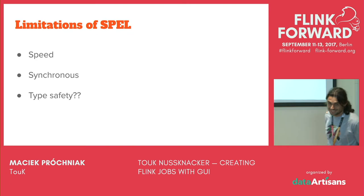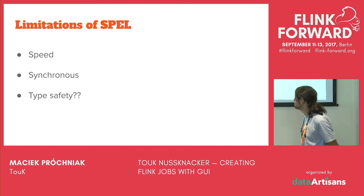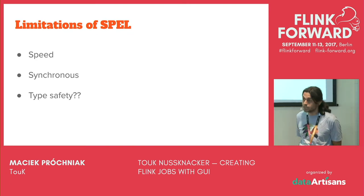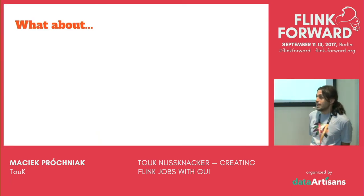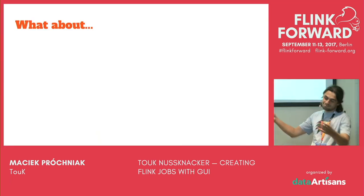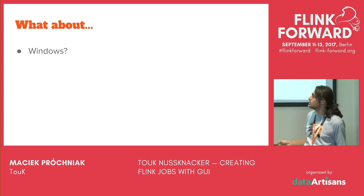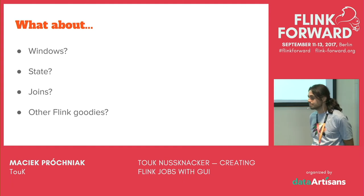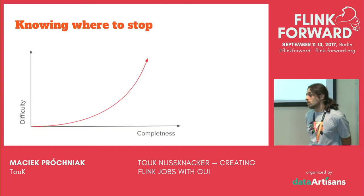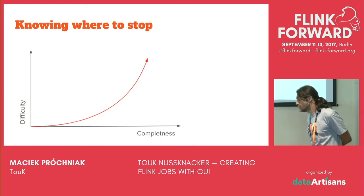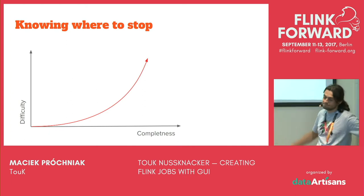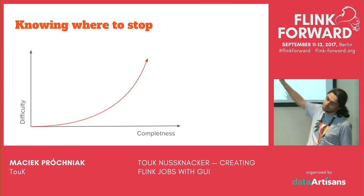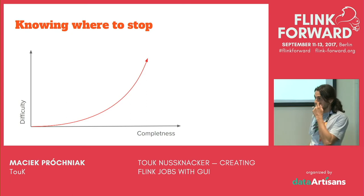You may ask about all those Flink goodies like windows, state, joins, and other stuff. We found that we want to hide most of them from the user. If we try to be as complete as possible, the difficulty rises exponentially, and there's no use trying to let the user define everything. Besides, our users are analysts — they don't want to understand all the details of watermarking or the differences between tumbling and sliding windows.